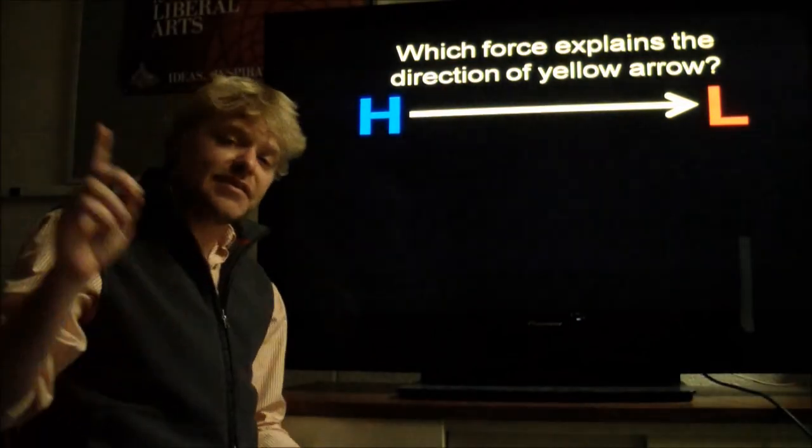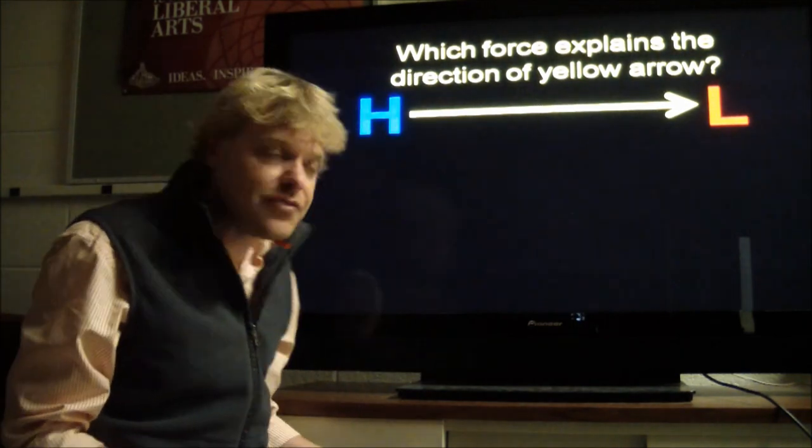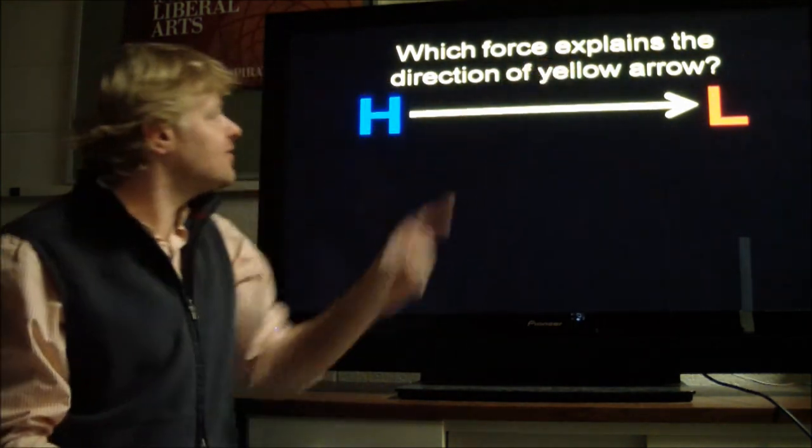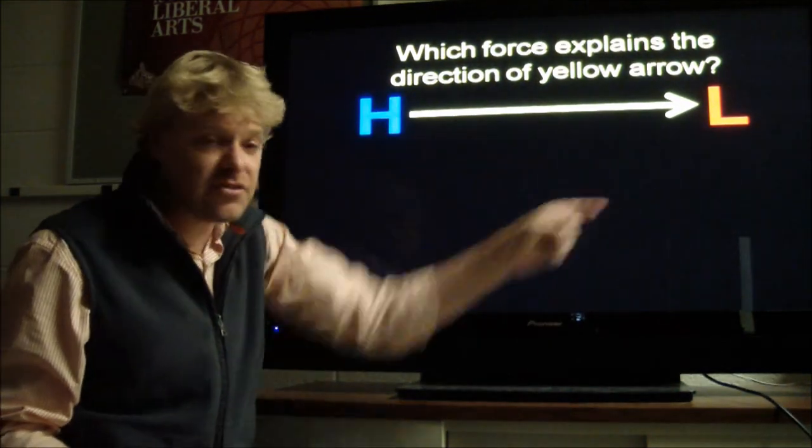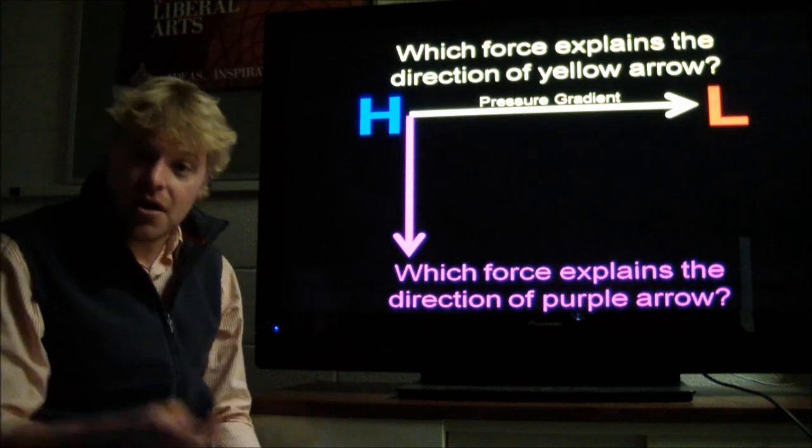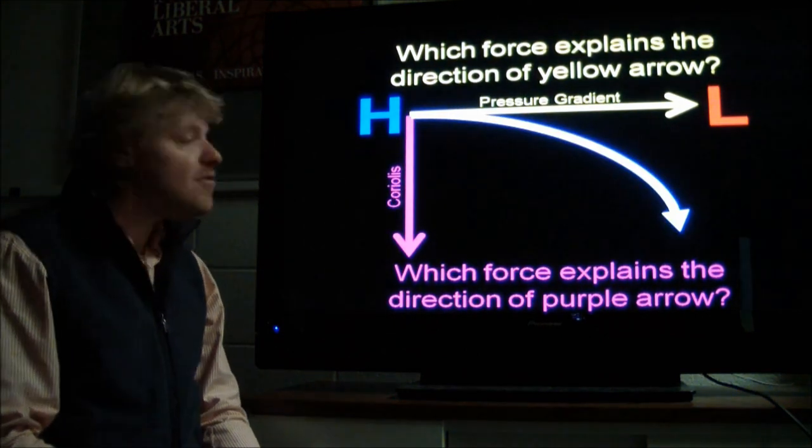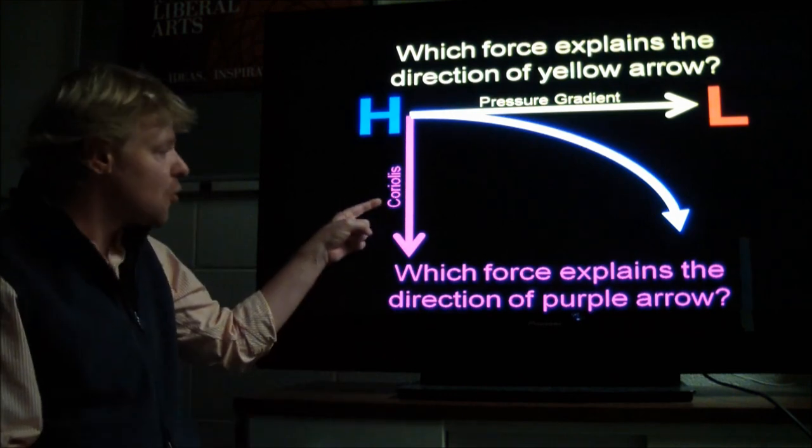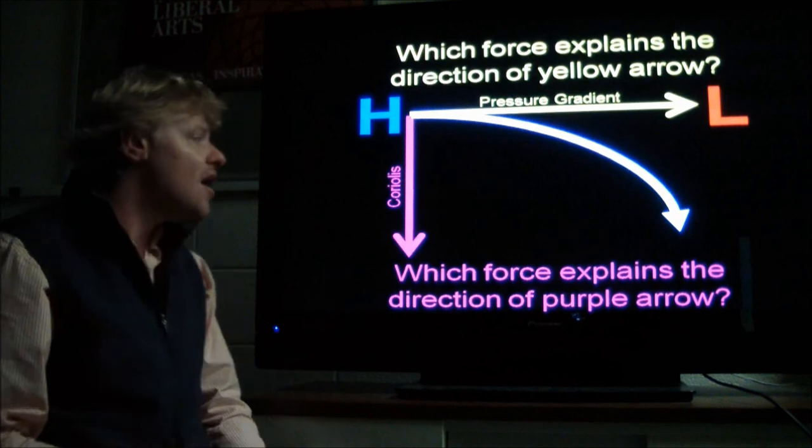And so finally, taking in the pressure gradient force and the Coriolis force. Which force explains the direction of the yellow arrow? Pressure gradient force, high to low. Which helps explain the direction of the purple area? Coriolis force. So then the net result of the pressure gradient force and the Coriolis force is a very much general bend to the right of these arrows.